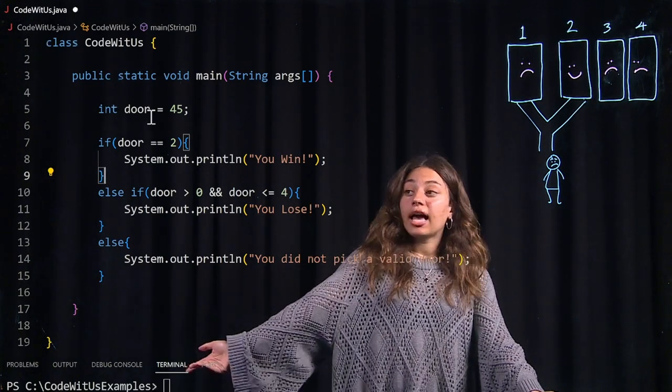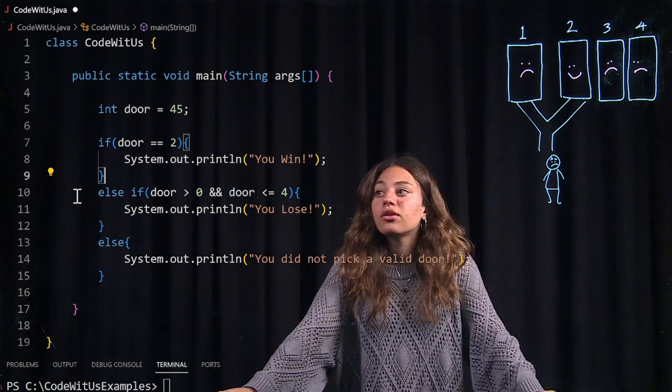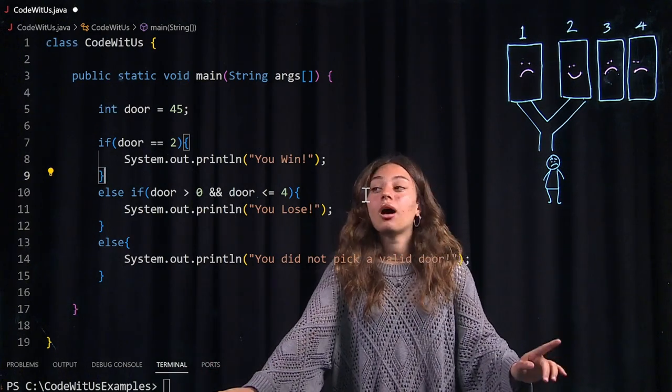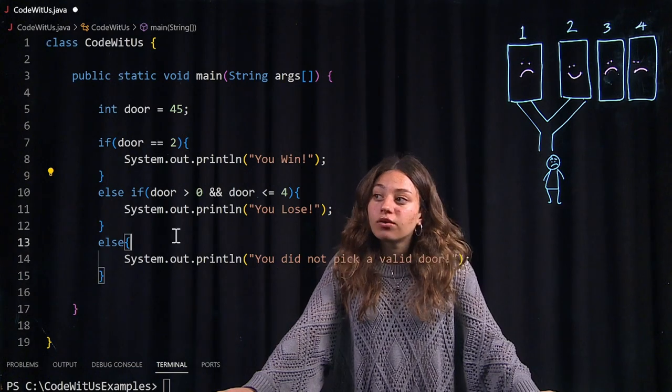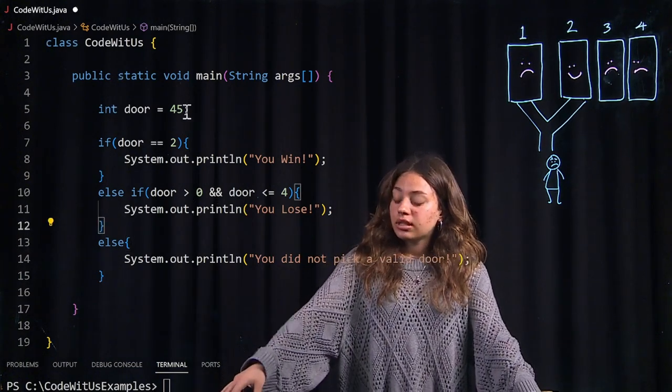So if the door I picked is 45, it is greater than zero but it's not less than four so this entire conditional statement is not met and it's going to skip over to the else statement.